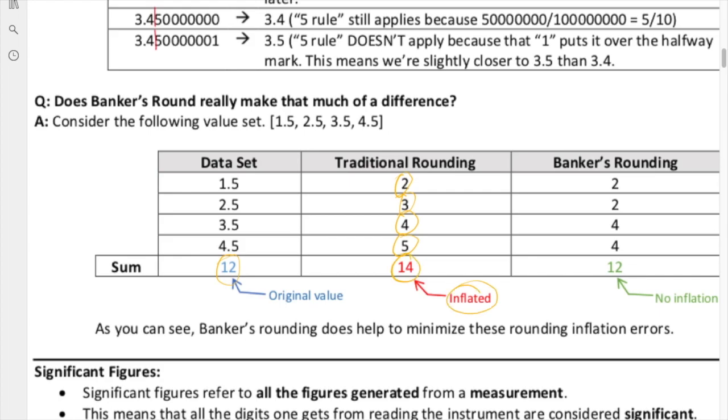If we use the banker's rounding, this 1.5 becomes a 2, this 2.5 stays at a 2, this 3.5 goes up to a 4, and this 4.5 stays at a 4. Even, even, even, even. When we add them up, that gives you a 12. As you can see, we get no inflation.